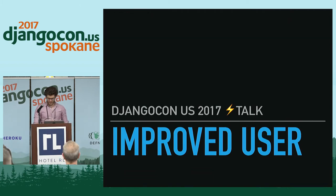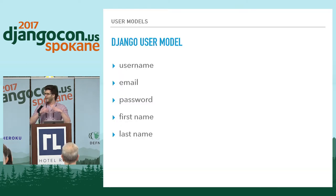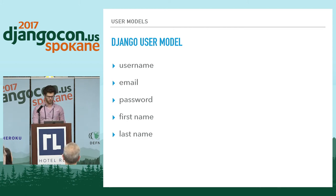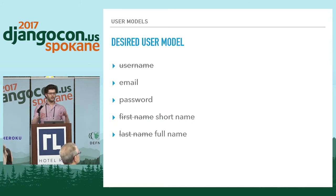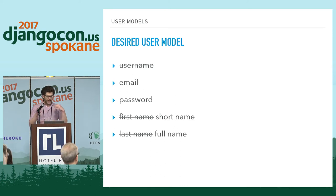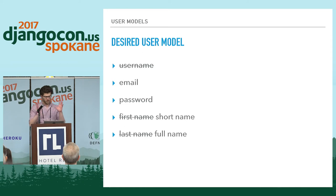Hi, my name's Andrew Pinkham, and I'm here to talk about the improved user. Django has an existing user model that gives you all of these fields. The problem is that this isn't necessarily what you want. It made a lot of sense when it was shipped, but nowadays you just want to log in with an email, you want a password, and for international reasons you usually don't want a first name or a last name — that doesn't work in a whole lot of countries. You might think about a short name or a full name instead.